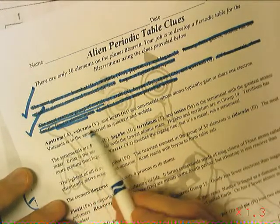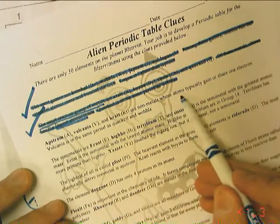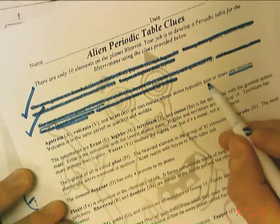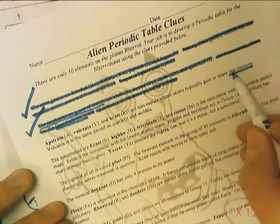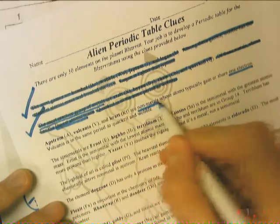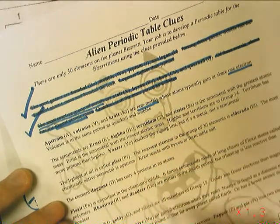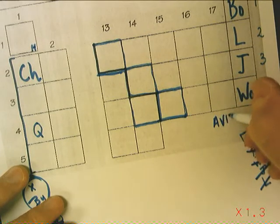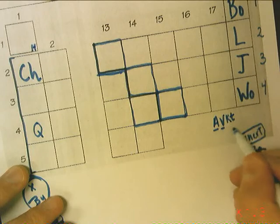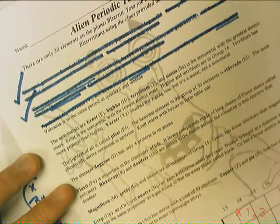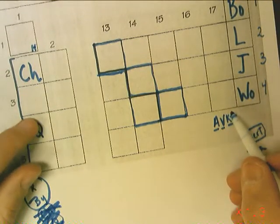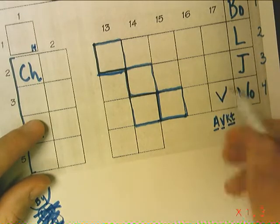ABSTROM, VULCANIA, and KRAT are non-metals whose atoms typically gain or share one electron. That means these are non-metals that are one electron away from being happy. So that tells me A, V, and KT go in group 17. VULCANIA is in the same period as QUAXIL and WOBBLE. That's VULCANIA then. I'll cross that out and check it.